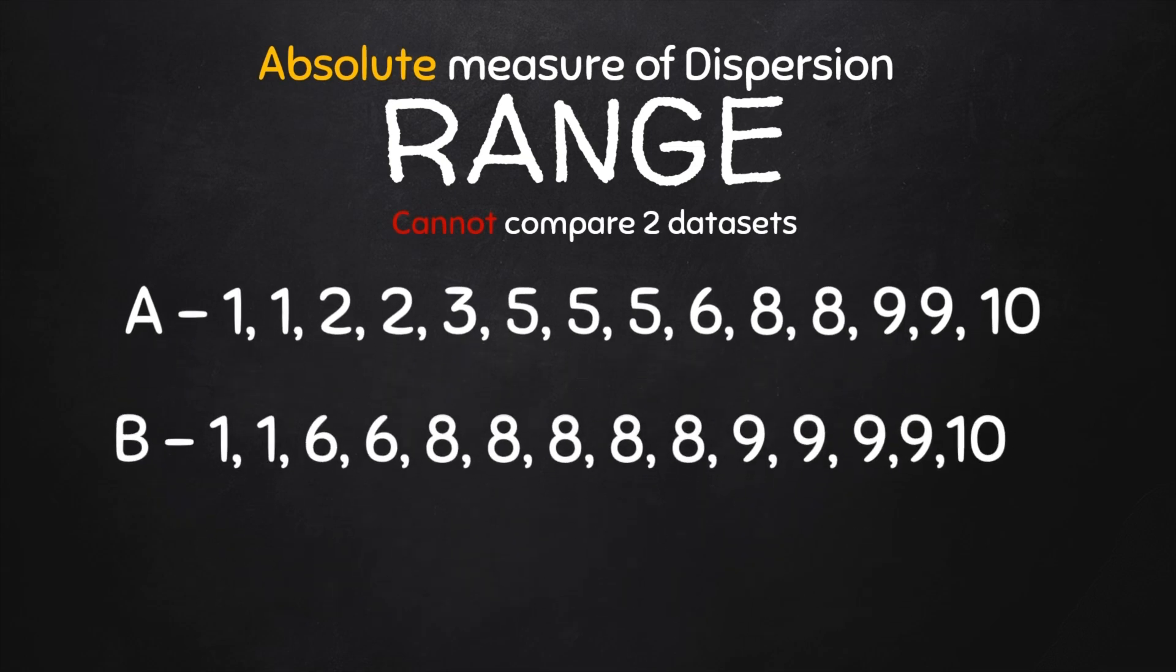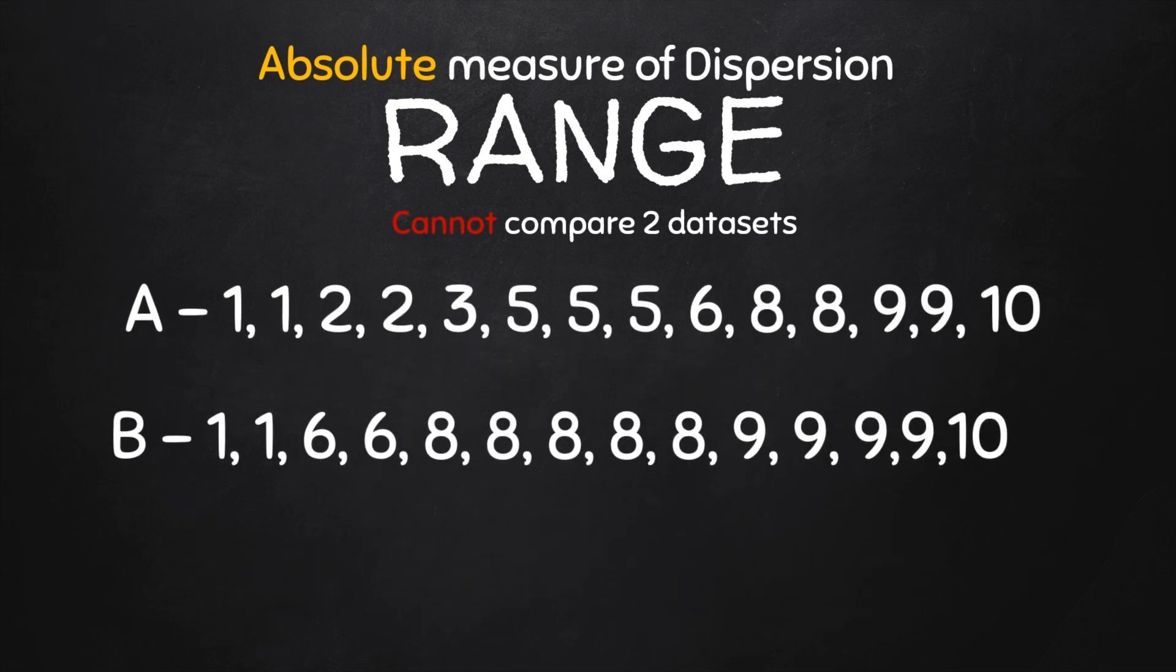But for the second one, we have 1, then it jumps to 6 and then 8 and then 10. So the 1 we're seeing here is even likely to be an outlier.